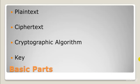The second part is ciphertext. Ciphertext represents plaintext rendered unintelligible by the application of a mathematical algorithm. Ciphertext is the encrypted plaintext that is transmitted to the receiver.